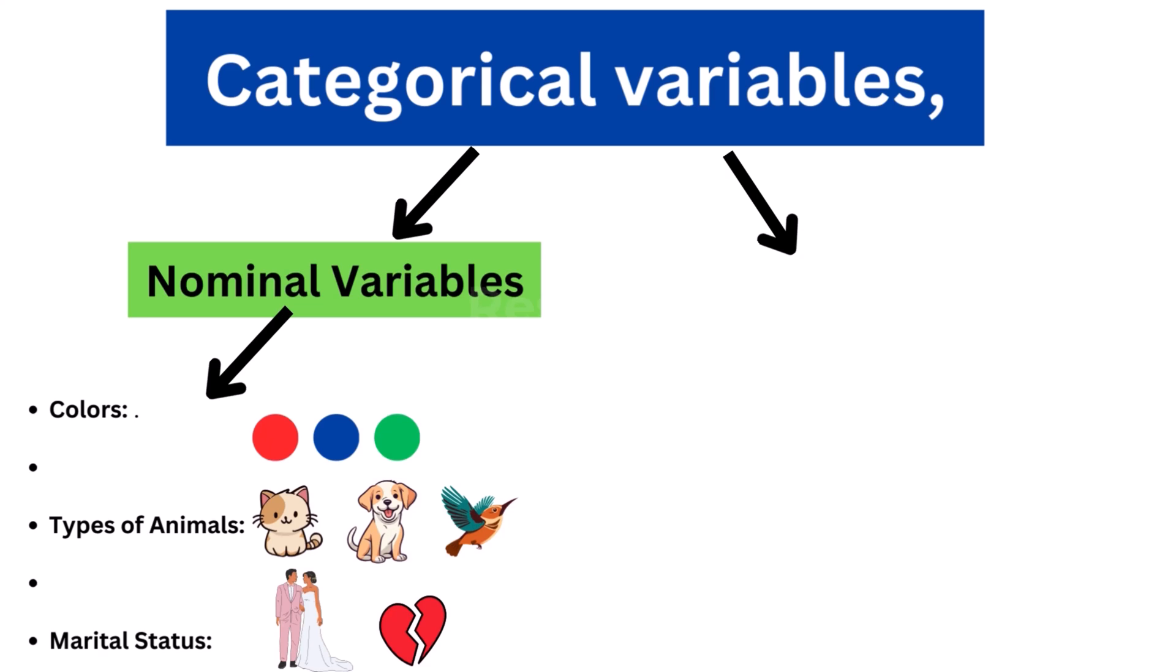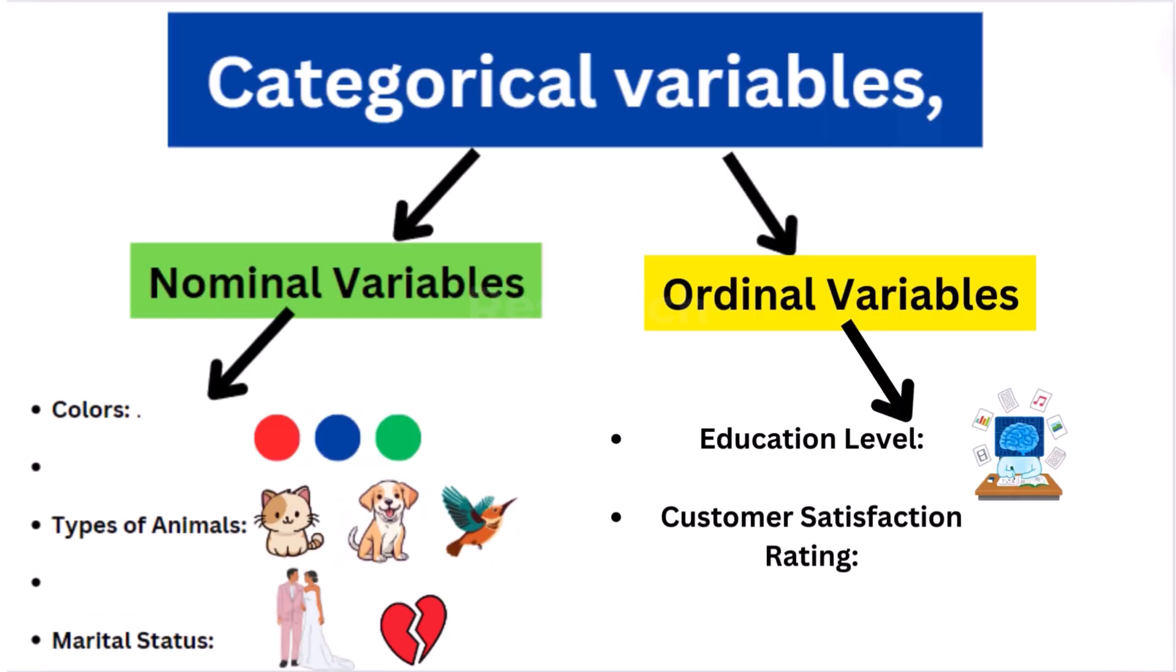Ordinal variables also represent categories, but they have a meaningful order or ranking among the categories.